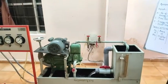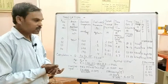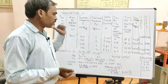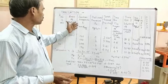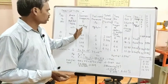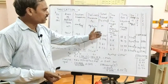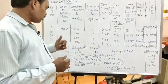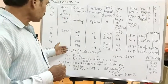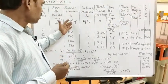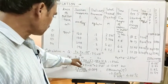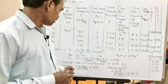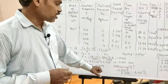Now we go for the tabulation part. After the experiment, the collected data are: area of the outlet tank is 900 cm². We record suction pressure, delivery pressure, total head, time for 5 cm height rise in the outlet tank, and time for 5 blinks of the energy meter. We put these values into the equations to convert suction and delivery pressure into head, then find the input and output power, and hence the efficiency.